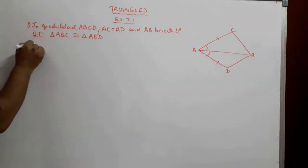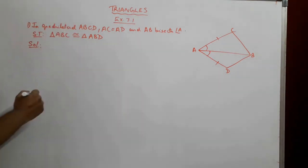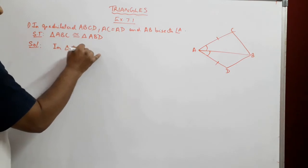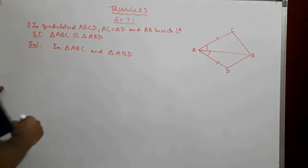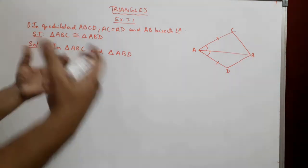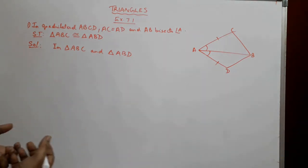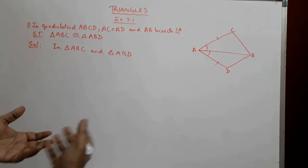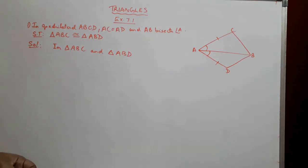Let us begin by solving what we have been given. We start with the two triangles in question — triangle ABC and triangle ABD. To prove congruence, we need to prove various corresponding sides or angles equal to each other, and ultimately prove that the two triangles are congruent.